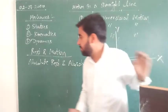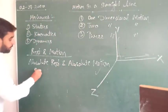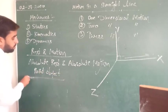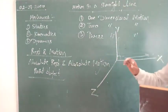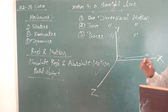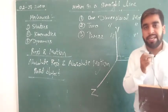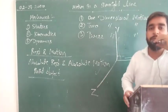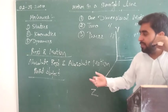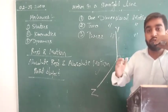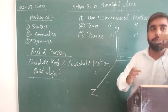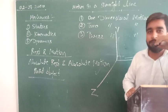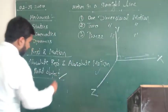Now we will study about point object. If the object is covering a distance which is much greater as compared to its own size, then the object is said to be a point object. For example, a train going from Kashmir to Kanyakumari covers a distance much greater than its own size, so it is treated as a point object.